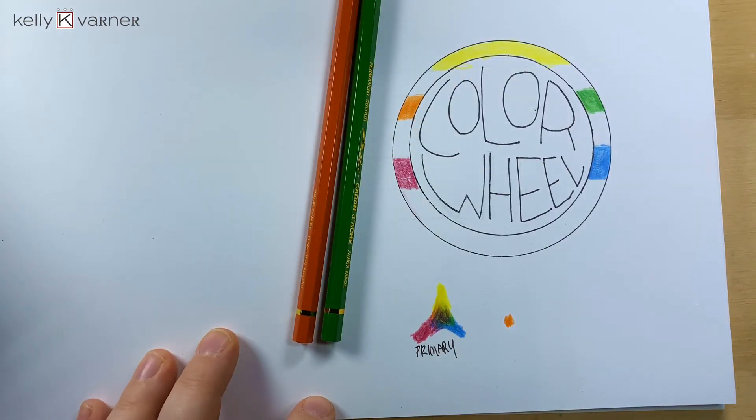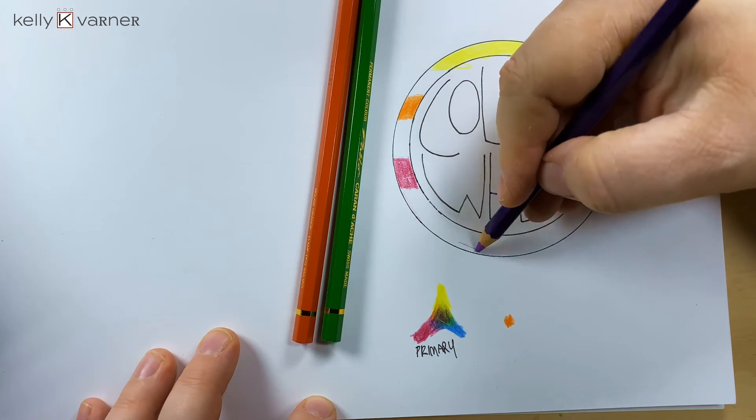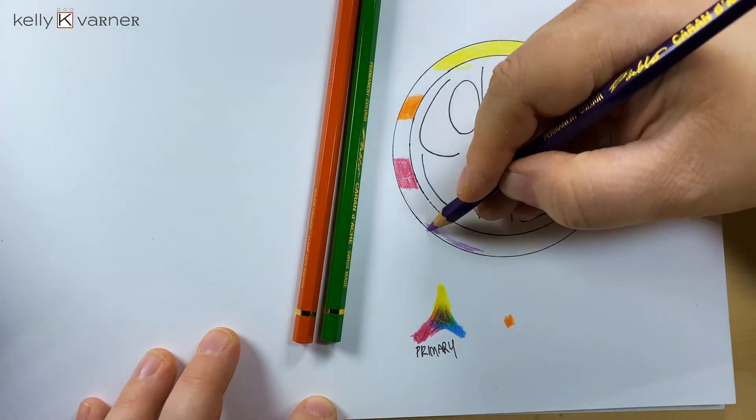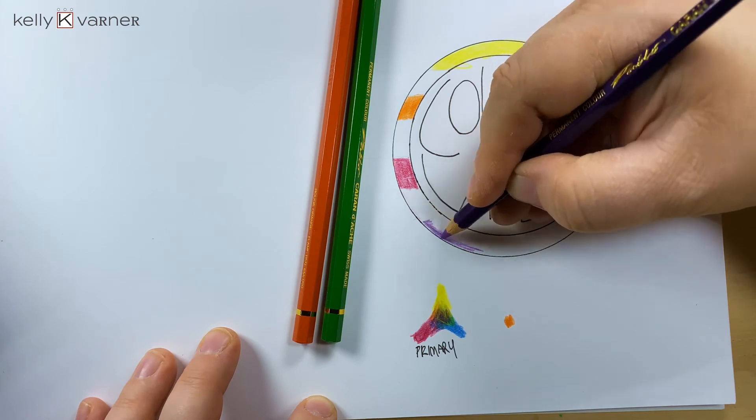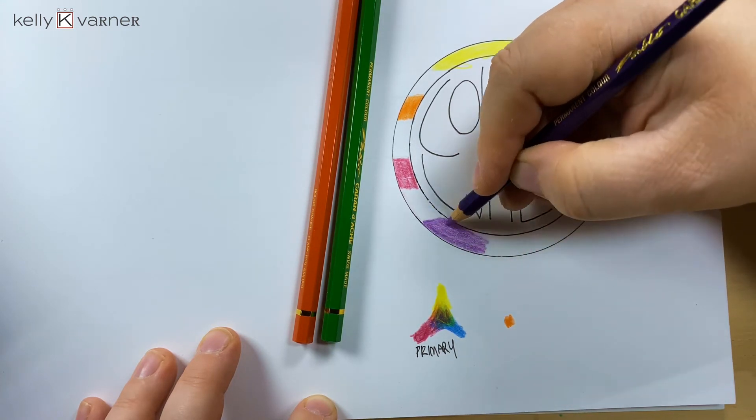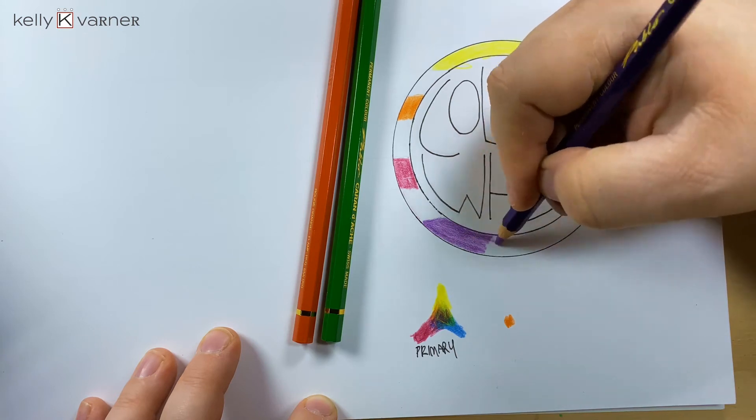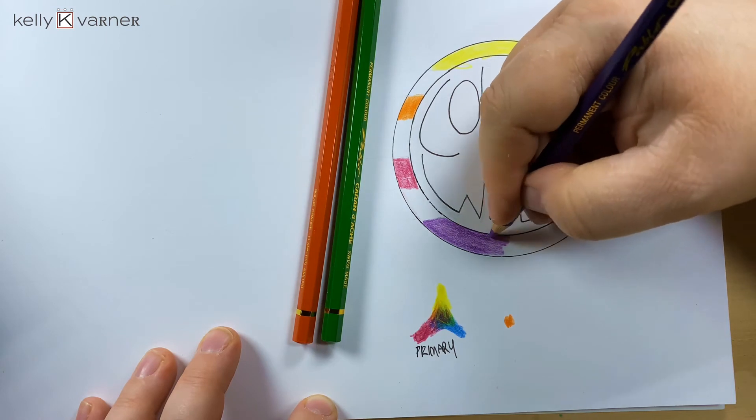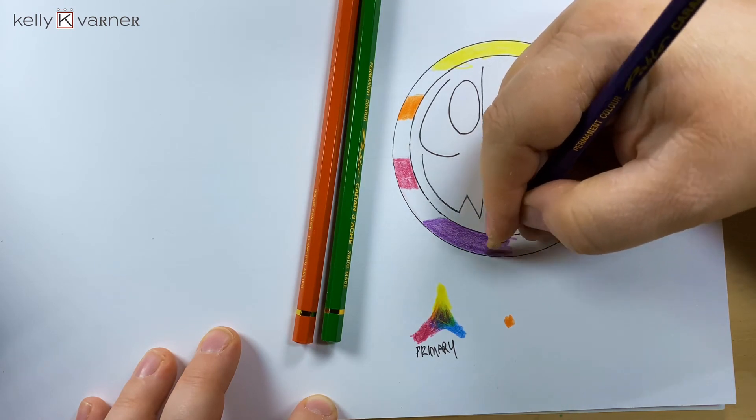Blue and red will make violet. Just like the yellow was a very high value, like a lighter value I should say, this is going to be one of the darker values that you use.